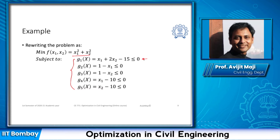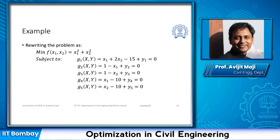The first constraint is that x1 is supposed to be greater than or equal to 1, which we can rewrite as the second constraint. We also said x2 is greater than or equal to 1, rewritten accordingly. Then x1 is less than or equal to 10, and x2 is less than or equal to 10. This gives us five different constraints. It is a proper multivariable optimization problem with inequality constraints.